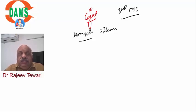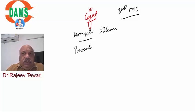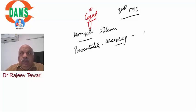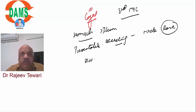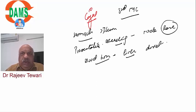Extra-intestinal GIST is most common in the omentum. The most common presentation is bleeding. Node metastases are very rare, unlike adenocarcinoma - GIST does not go to nodes. It spreads either by direct invasion (most common site: omentum) or blood-borne metastasis (most common site: liver).